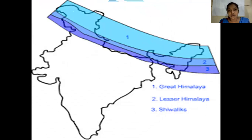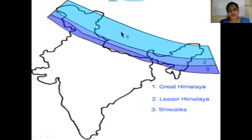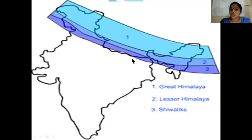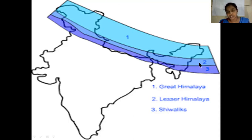The Himalayas are divided into three parts: the greater Himalayas, also known as Himadri range; the middle or lesser Himalayas, also known as Himachal range; and the lower Himalayas, also known as Shivalik ranges.